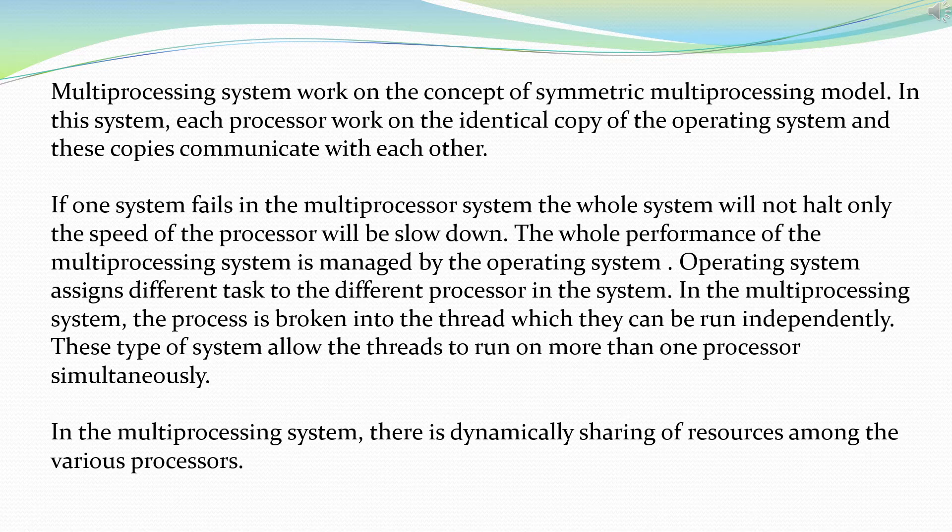The whole performance of the multiprocessing system is managed by the operating system. The operating system assigns defined tasks to defined processors. In the multiprocessing system, the process is broken into threads which can be run independently. This type of system allows threads to run on more than one processor simultaneously, running various processes in parallel — so this is called parallel processing.